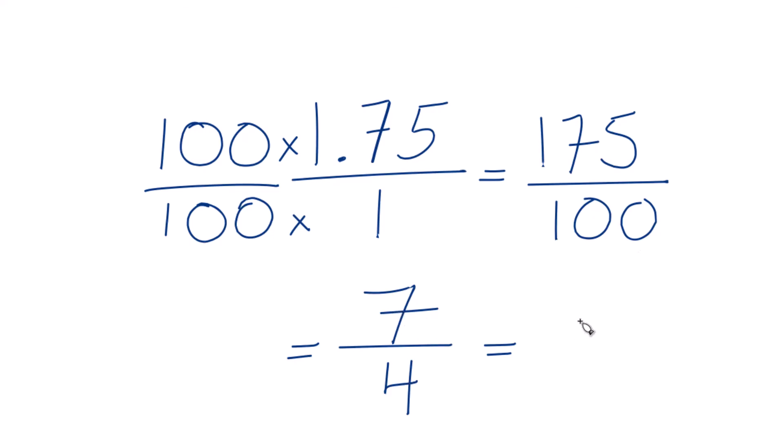4 goes into 7 one time with 3 left over. Let me just bring the 4 across. And you can check that too. 1 times 4 is 4, plus 3 gives us 7. That's the 7 here, and the 4 stays the same.